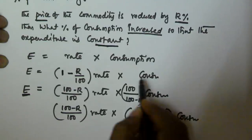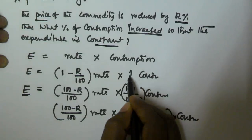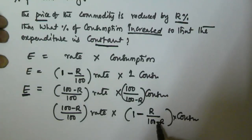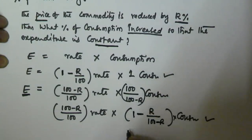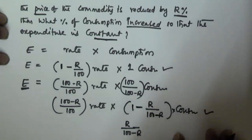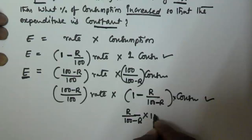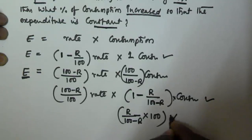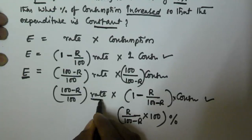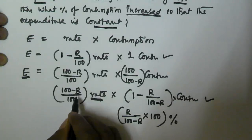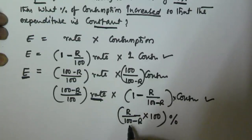Initially the consumption is 1, but now the consumption is 1 minus R/(100 minus R). That means the consumption is reduced by the fraction R/(100 minus R). To get the corresponding percentage, we multiply by 100. So the consumption is reduced by R/(100 minus R) × 100%. Therefore, if the price of the commodity is reduced by R%, then the consumption must be increased by R/(100 minus R) × 100%.